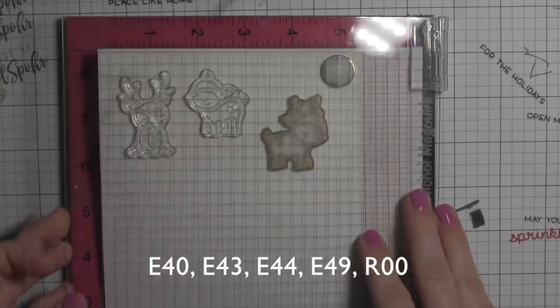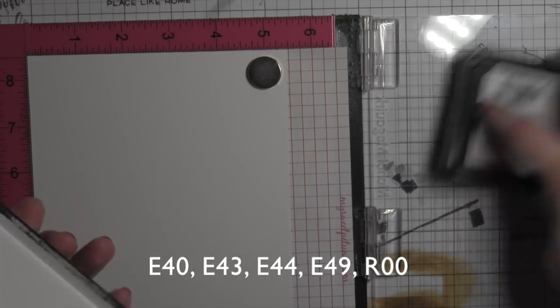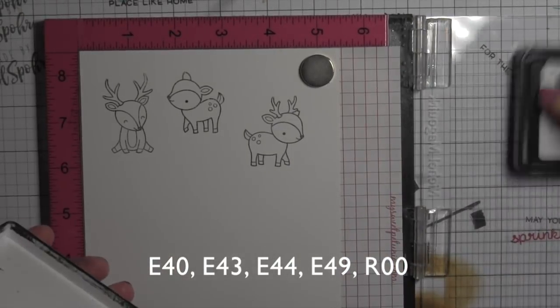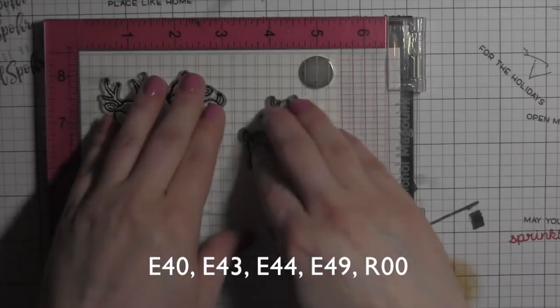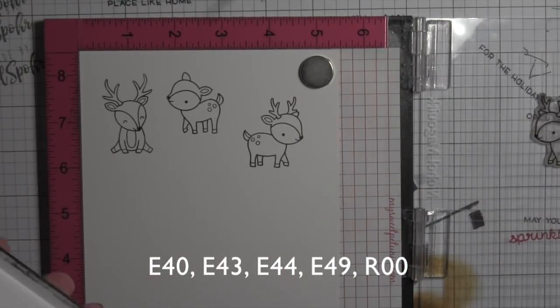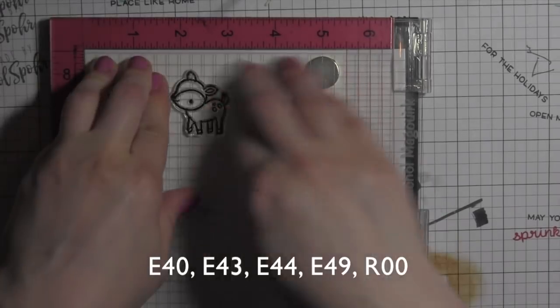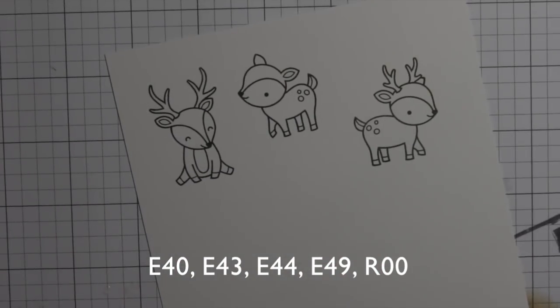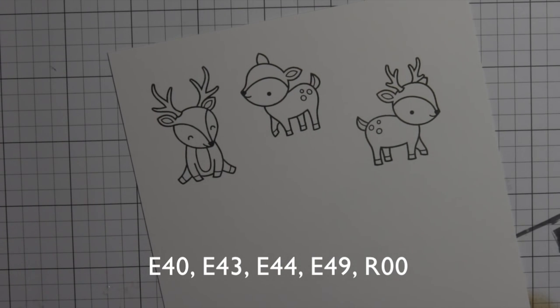I'm going to take the deer images from the new Cheery Christmas stamp set and also one from last year's Toboggan Together stamp set. I'm using the MISTI to stamp them all at once, and also stamp them about three times one on top of each other using Simon Says Stamp Intense Black ink. Gives you nice crisp black stamped images outline there.